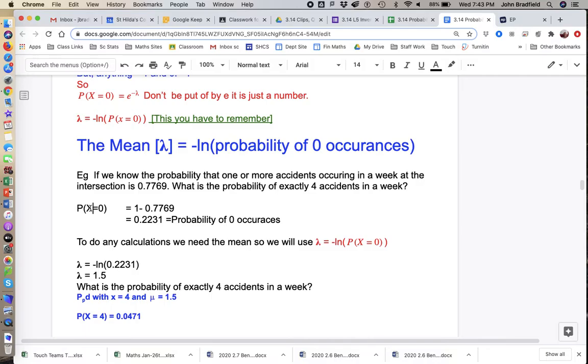So, first, the probability that there are zero accidents - x stands for the number of accidents per week - we go one minus that. That's one minus the probability there's one or more accidents, which is the information we were provided in the question. So, therefore, the probability of zero accidents is 0.2231.